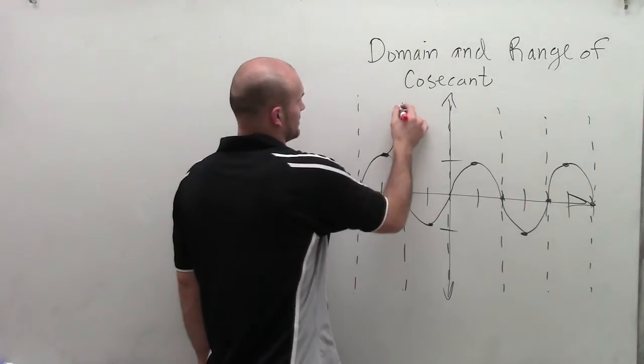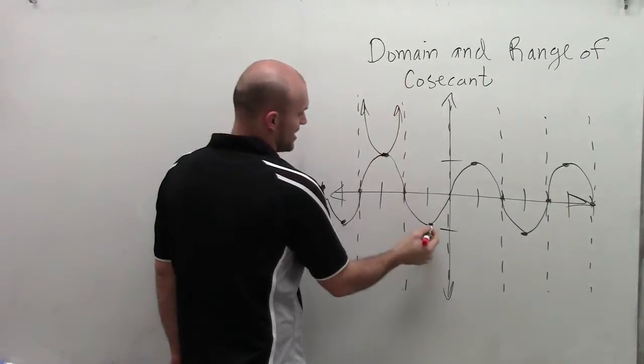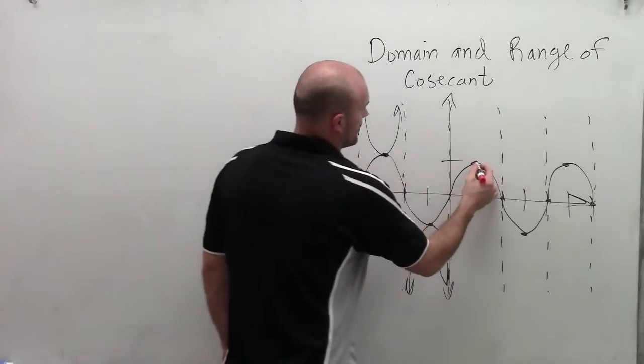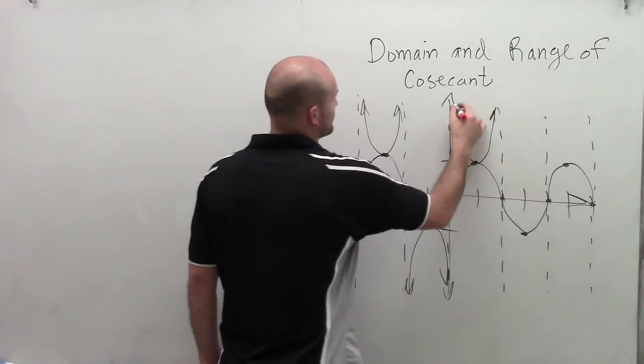Then they share, actually, the same vertexes. And our graph is now going to go in the opposite direction, with our graphs now approaching each one of these asymptotes.